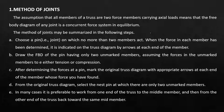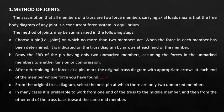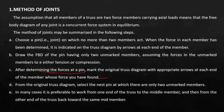When the force in each member has been determined, it is indicated on the truss diagram by arrows at each end of the member. Next, draw the free body diagram of the pin having only two unknown members. As stated, if you have three or more unknown members it would be difficult to use equilibrium equations. Assume the forces in the unknown members are either tension or compression. After determining the forces at a pin, mark the original truss diagram with appropriate arrows at each end of the member whose force you have found.